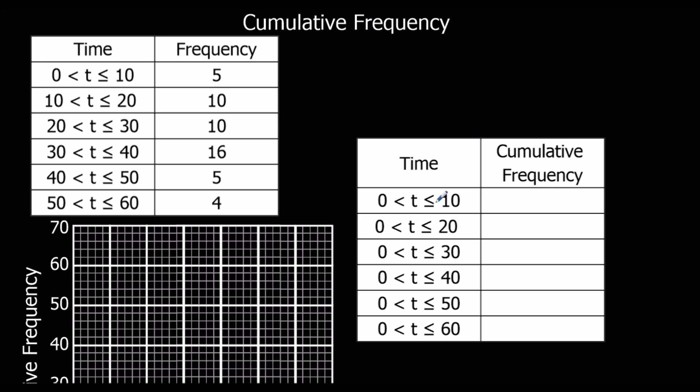So this is up to 10. Everything up to 10. So what's up to 10? Just this first one. So just 5 is up to 10. The second box is up to 20, so everything up to 20, both of these two boxes together. So we're adding on the 10, so that makes 15.